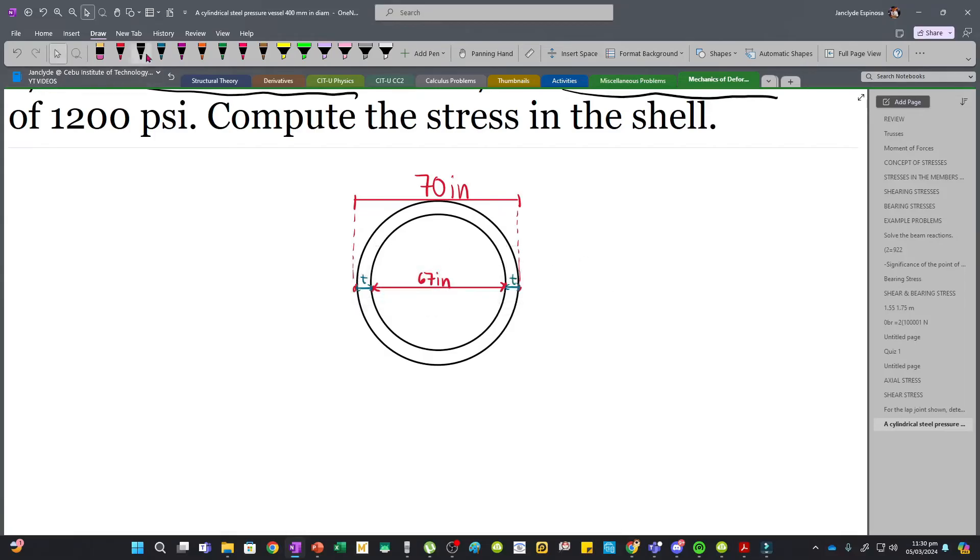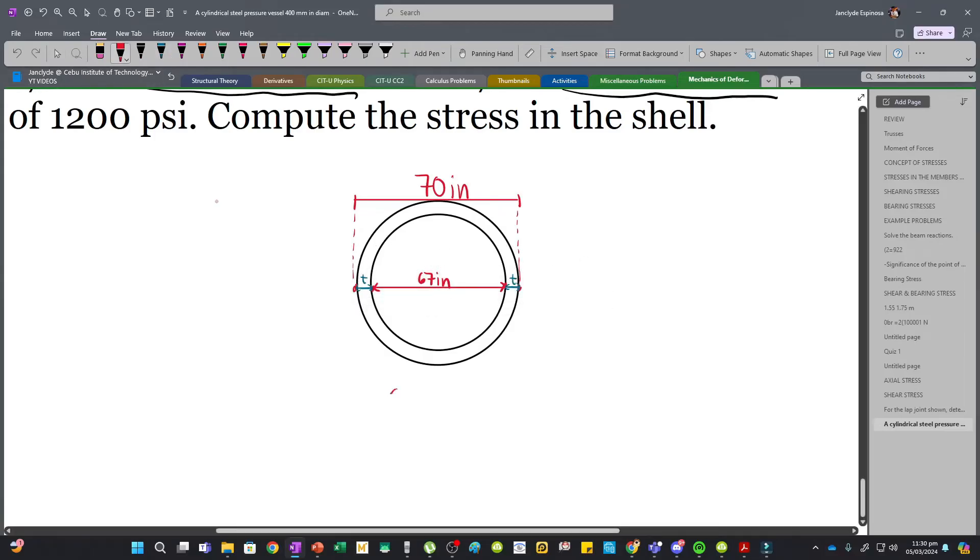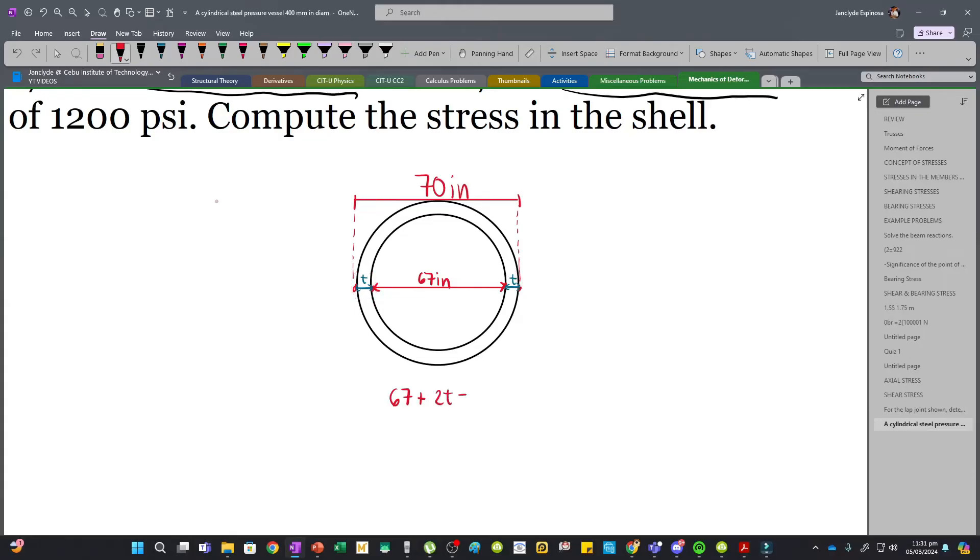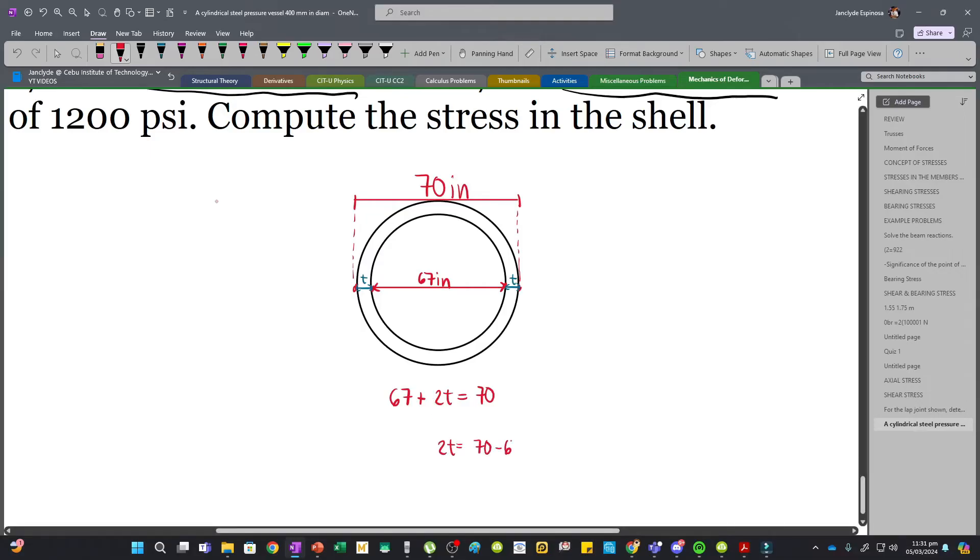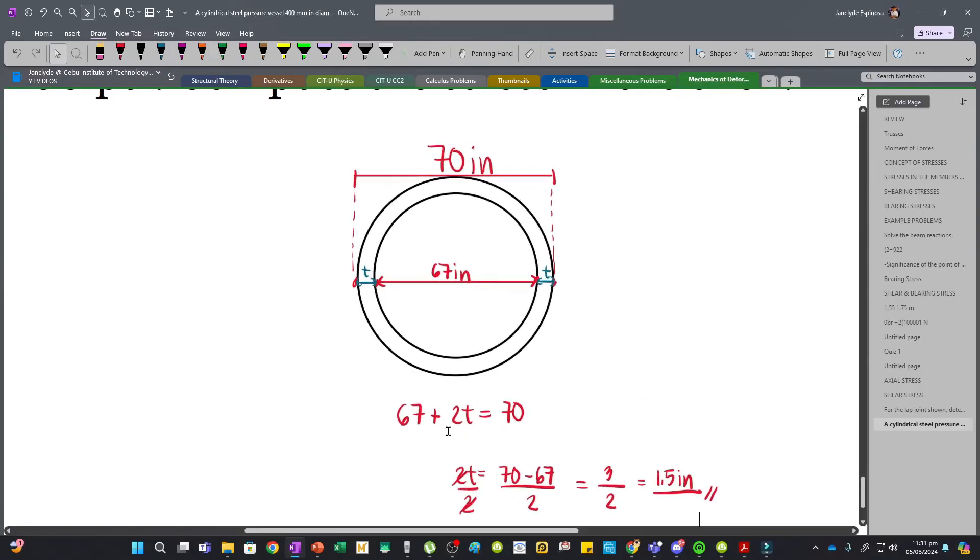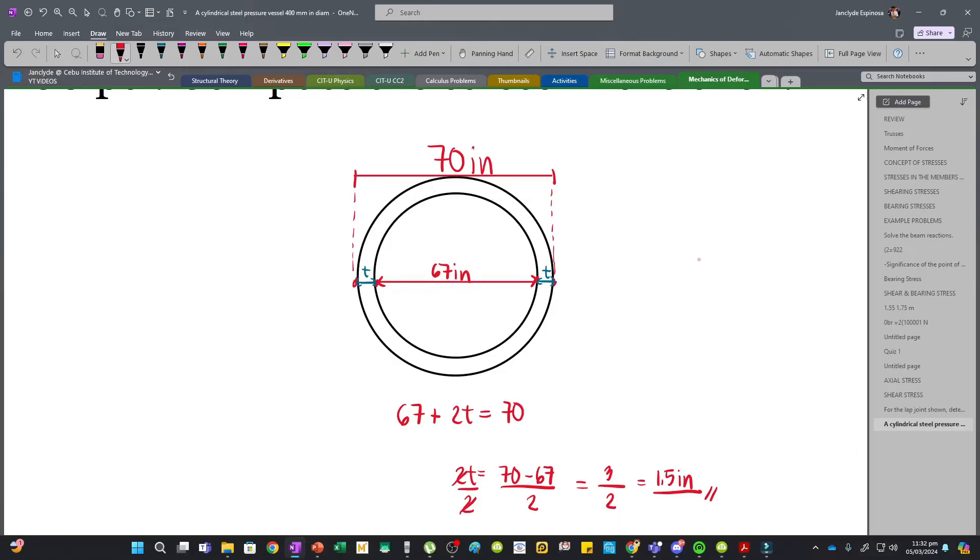Notice that this is our thickness and also this one. If we solve the thickness, we have the inner diameter which is 67 plus 2T equals the outer diameter which is 70. When we solve for T, we have 2T equals 70 minus 67, then divided by 2. Our thickness will be 3 divided by 2, which is 1.5 inches. Most students got this wrong because they only subtracted 67 from 70, but that's the total of these two thicknesses, not the thickness itself.